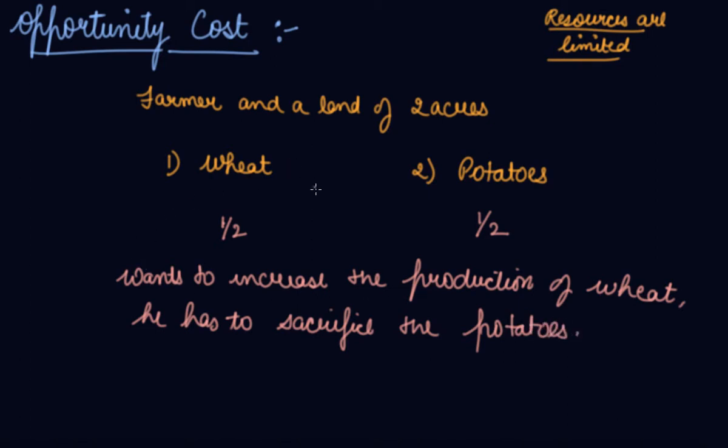In order to choose wheat, he has to sacrifice some of the potatoes. Some area of the potatoes in which he is used to grow. In order to choose the best alternative, you have to sacrifice the next best alternative, which is your potato. The amount of potatoes that you sacrifice will be your opportunity cost.